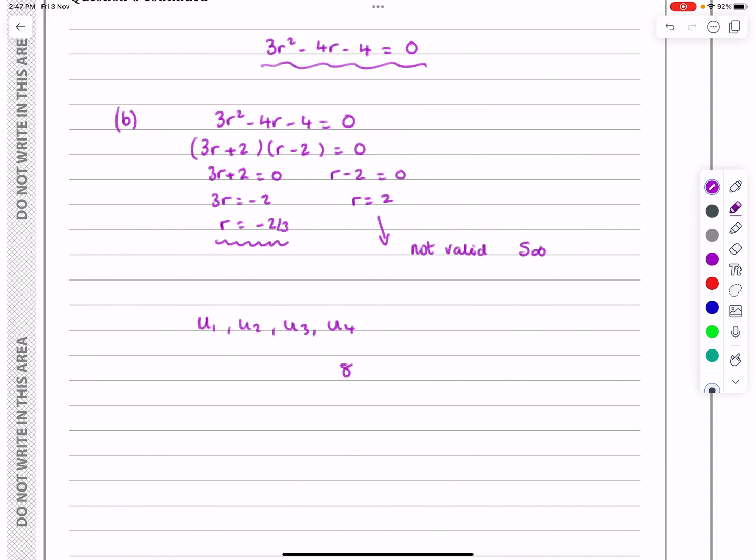So if I do 8 divided by minus 2 thirds, I'm going to get what U3 is. So U3, let's tell the examiner what I'm doing. So U3 is 8 divided by minus 2 thirds, that works out to be equal to, sorry, minus 12, not 12, minus 12.